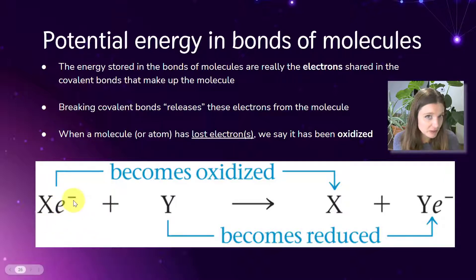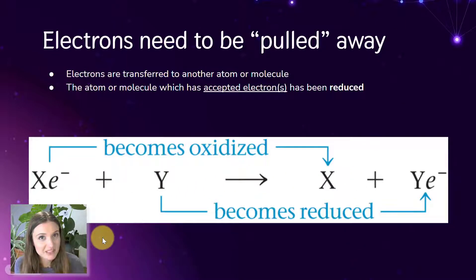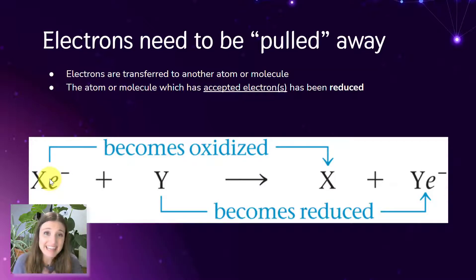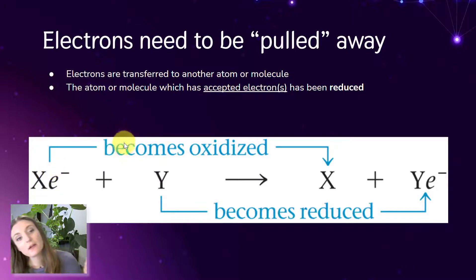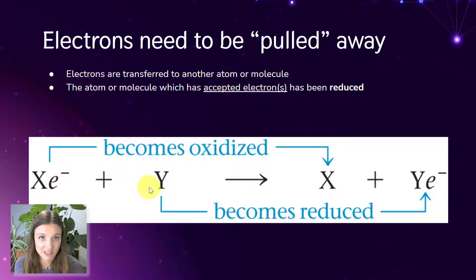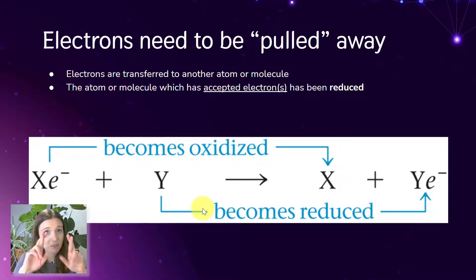These electrons represent a form of energy that can eventually be used to make ATP. But these electrons don't just spontaneously run away — they need to be pulled away or pulled off of that molecule or atom. They're usually transferred to another atom or molecule. That atom or molecule which takes those electrons away — once it gains those electrons from the molecule that's been oxidized — we say it has been reduced. The way I remember this is LEO says GER: lose electron oxidation, gain electron reduction. These happen in pairs, always coupled together, and we call them redox reactions.